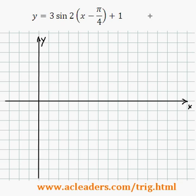Let's start by analyzing this equation. The amplitude is equal to 3, b, this number here, is equal to 2, which gives us the period. The horizontal shift or phase shift is pi over 4, and the vertical displacement is equal to 1.